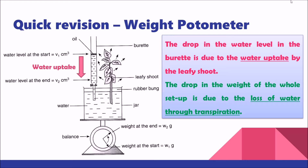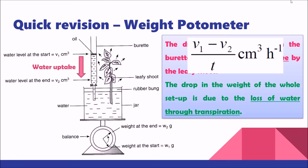For the first set of data, we look at the change of the water level in the burette. The drop in the water level in the burette is due to water uptake by the leafy shoot. Once the leafy shoot absorbs water from the jar, there is space in the jar, and the water in the burette drops to fill it. So we calculate water uptake as V1 minus V2, and dividing by time gives the rate of water uptake — in units of cm³ per hour.